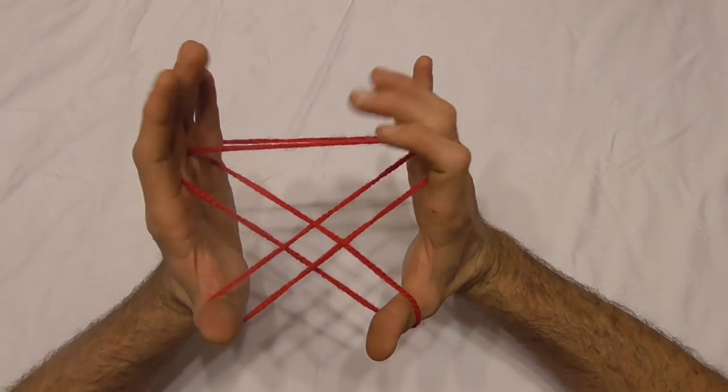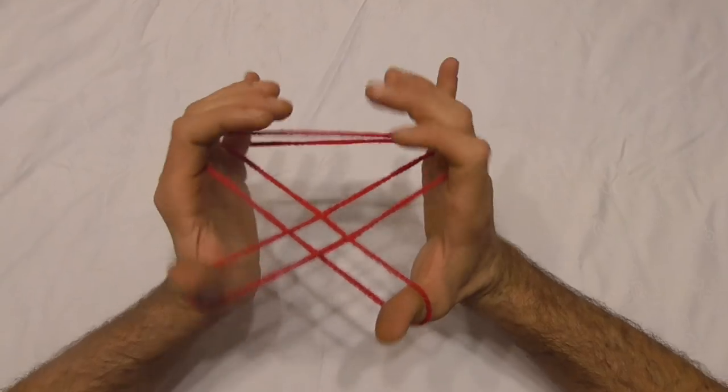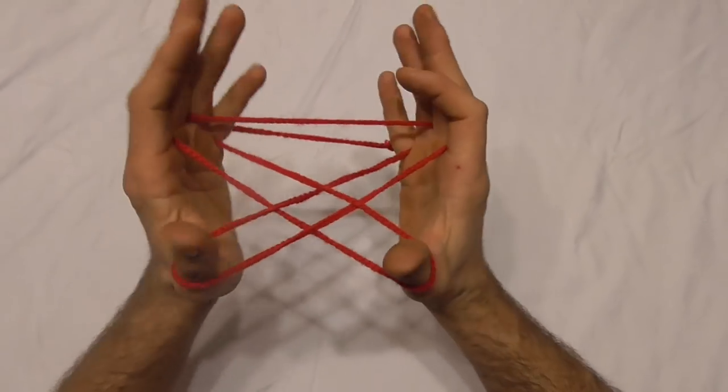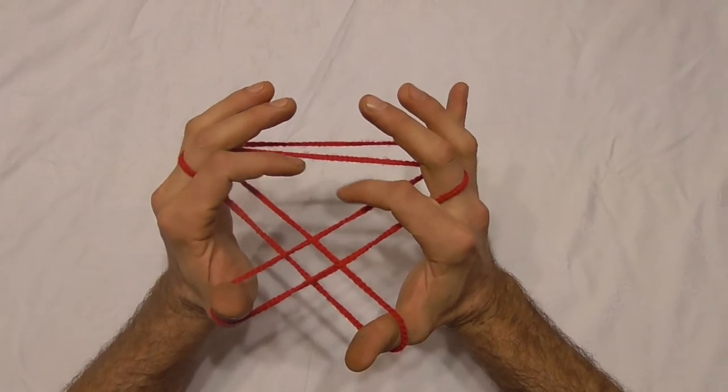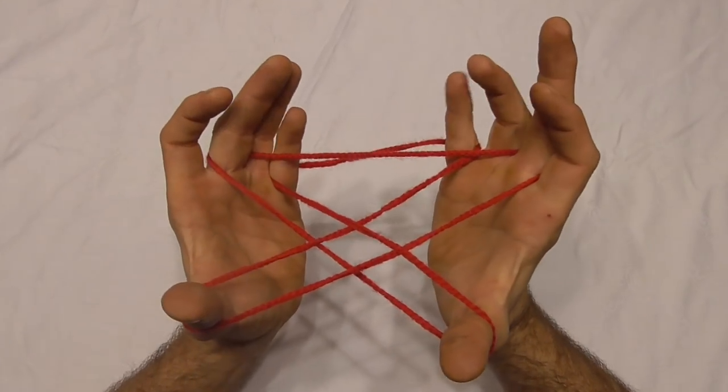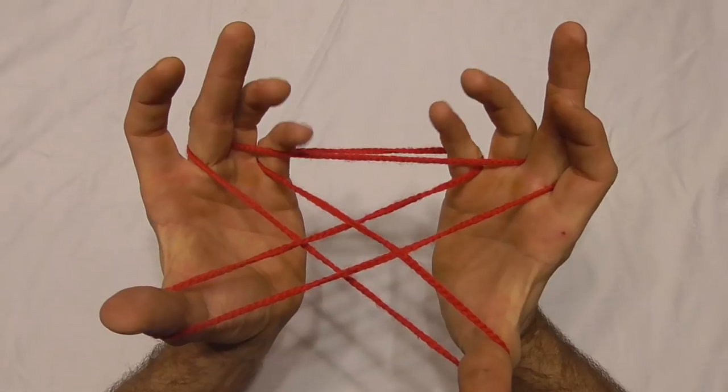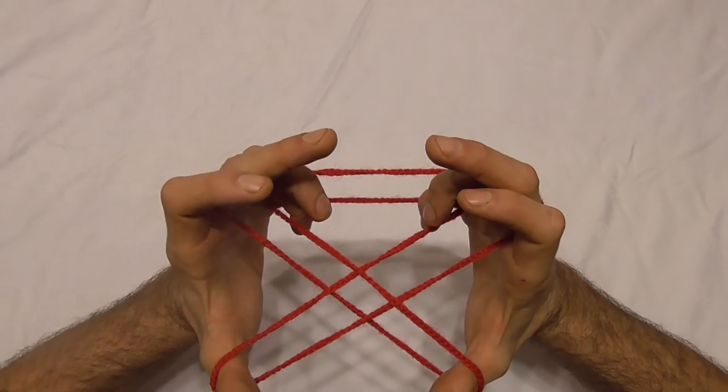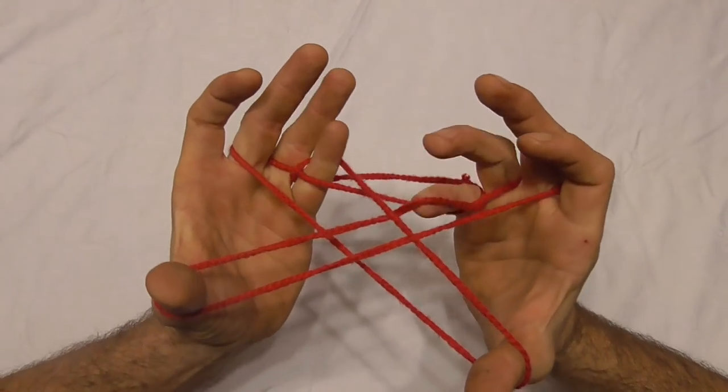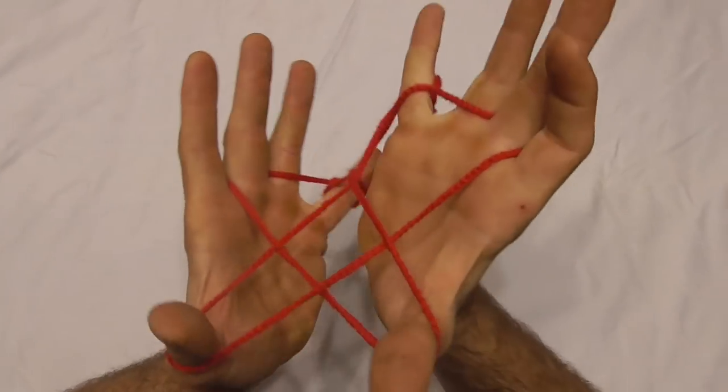And now you should see that there is this triangle at the back here. What I want you to do is, with your little fingers, go into that triangle and then pick up that diagonal string from underneath and bring it back.